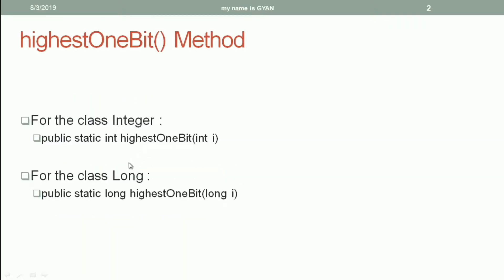In both integer and long classes, the highestOneBit() method is public and static. That means it can be called by using the class names integer and long. The method returns a primitive int in the class integer and a primitive long in the class long. It accepts a primitive int or a primitive long as its argument respectively.